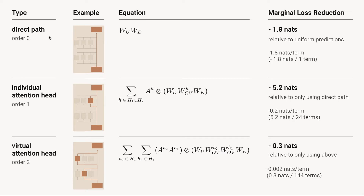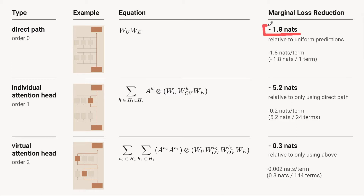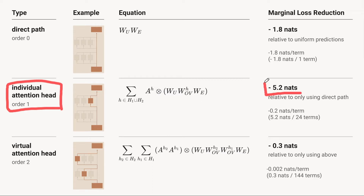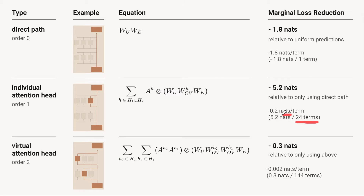For the direct path term, which is just going straight down the middle, if you're measuring relative to just making random predictions, you reduce the loss by 1.8 nats when you add that term to the model. That's a pretty nice result, especially just for a single, very simple term. The individual attention heads, if we add those on top of the direct path term, give us a reduction of 5.2 nats. Since there are 24 terms, it's actually quite a bit less than the direct path term per head — only 0.2 nats — but yet they're still doing a lot of work.